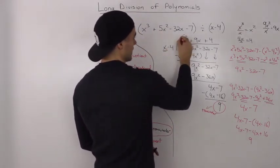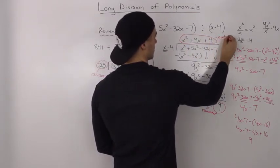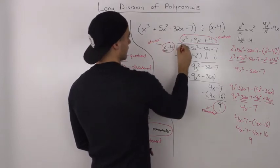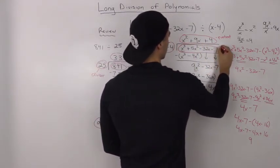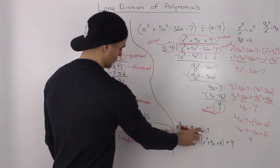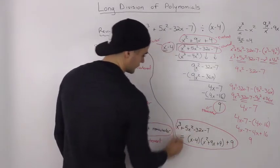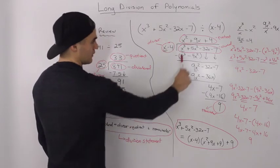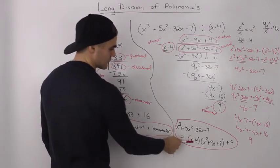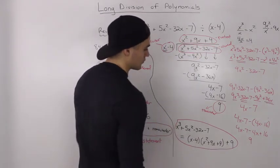Let's do a recap of what each part is. The result x squared plus 9x plus 4 is our quotient, x minus 4 is our divisor, and x cubed plus 5x squared minus 32x minus 7 is our dividend. Rewriting as the division statement: the dividend x cubed plus 5x squared minus 32x minus 7 equals the divisor (x minus 4) times the quotient (x squared plus 9x plus 4), plus the remainder of 9.